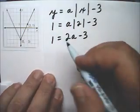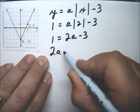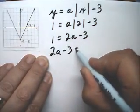Okay, solving this, I'll put 2a minus 3 equals 1.